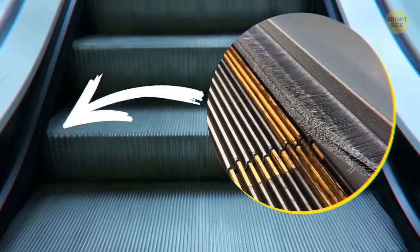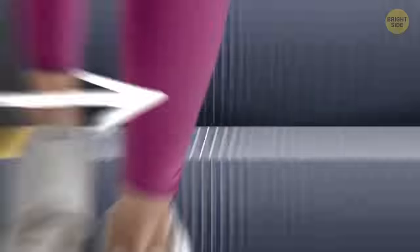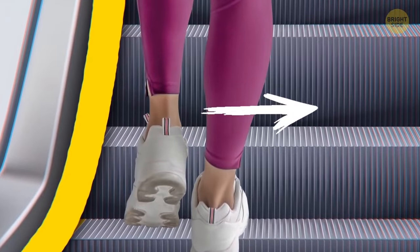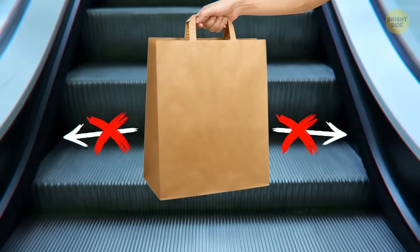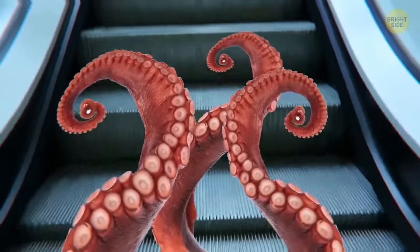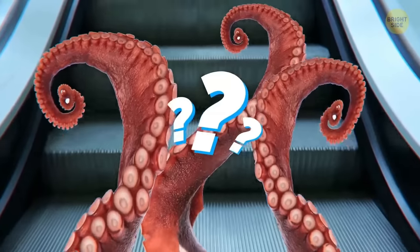Meanwhile, the bristles on the side of every escalator are in place to encourage people to stay away from the edge, meaning they're less likely to face a mishap with a trapped bag or shoelace. Did you hear about the octopus caught on the escalator? It was a stretch.